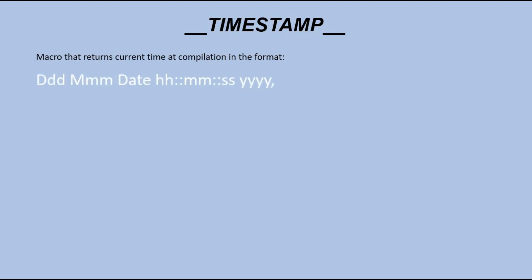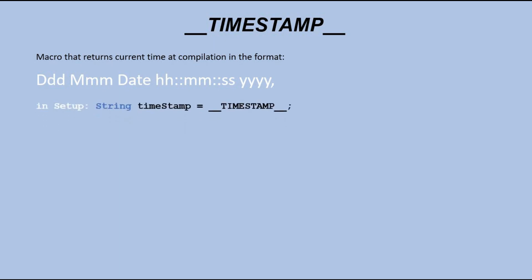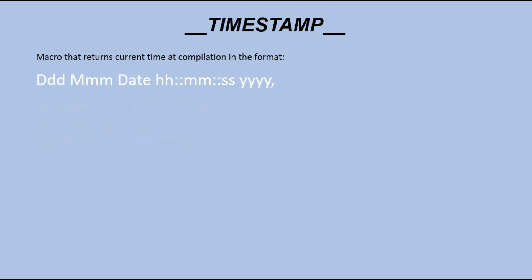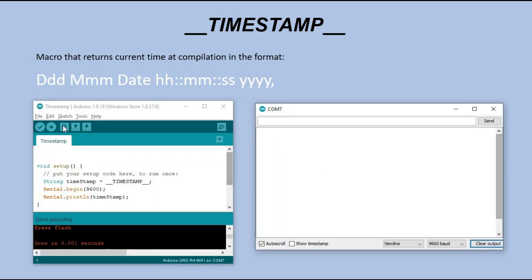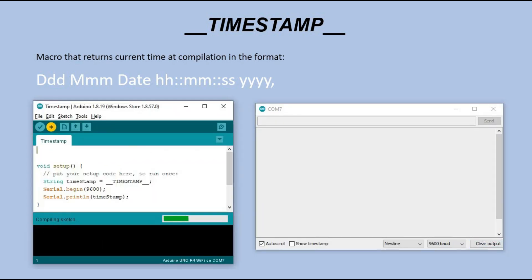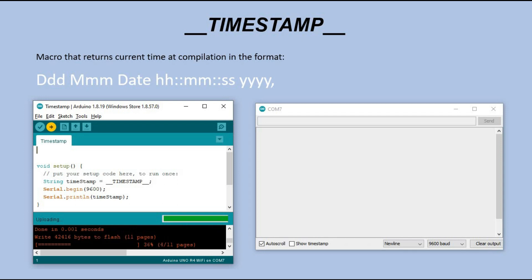Let me show you how it works. First, we create a string variable in the setup part of the code and store the time from the timestamp macro into this variable. Then we open the serial monitor and display this string. Let's take our code and put it through the compilation process and see what happens as a result. Great — so we just display the time when we compile the program.